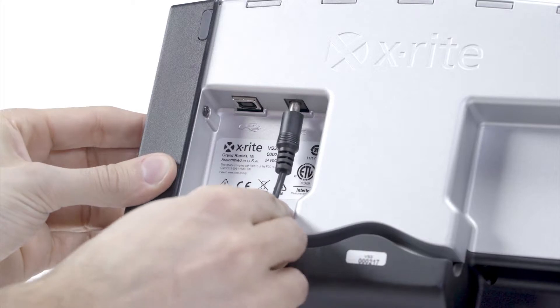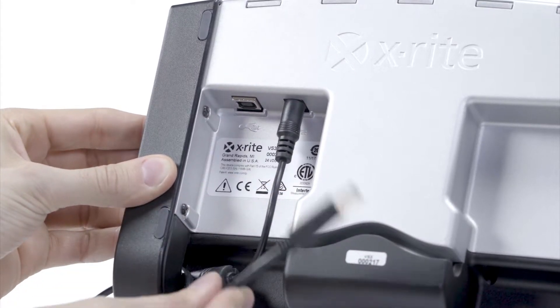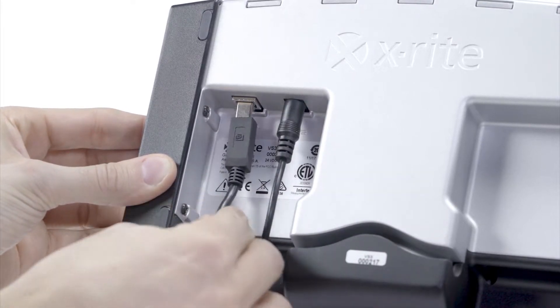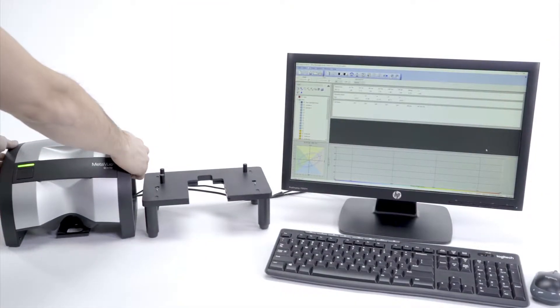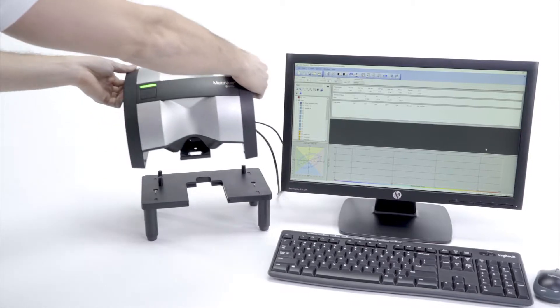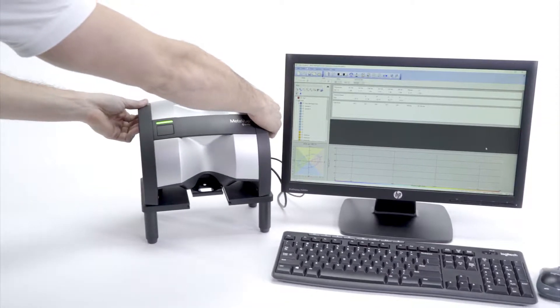To set up MetaView with the instrument stand, begin by directing the USB wires through the cable routing system. This will help keep your measurement space clear and easy to navigate. Then place the instrument onto the stand, with an option to tighten the two thumb screws that secure the MetaView to the stand.